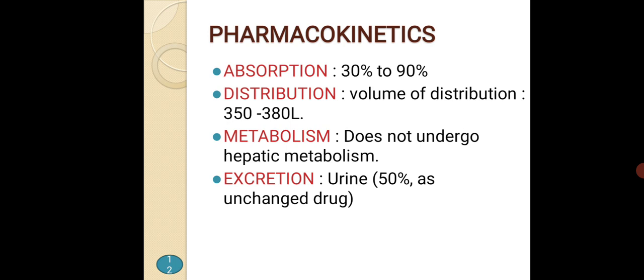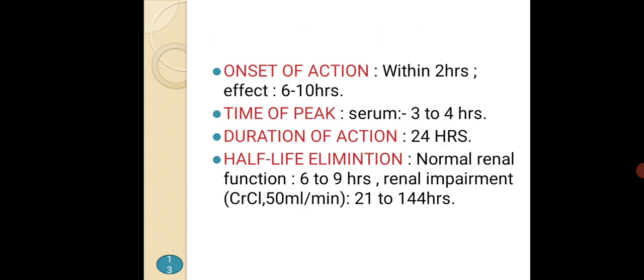Pharmacokinetics: Absorption is 30 to 90%. Distribution is 350 to 380 litres. Metabolism: it does not undergo hepatic metabolism. Excretion: urine 50% as unchanged drug. Onset of action is within 2 hours with effect lasting 6 to 10 hours. Time to peak is 3 to 4 hours. Duration of action is 24 hours. Half-life elimination: normal renal function is 6 to 9 hours; for renal impairment it is 12 to 144 hours.